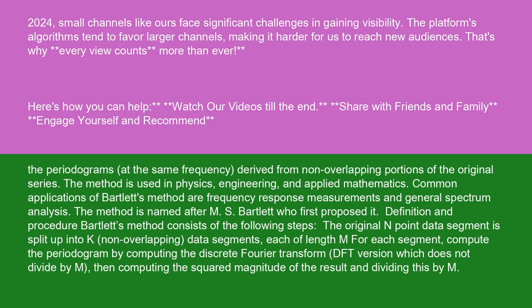Definition and procedure: Bartlett's method consists of the following steps. The original endpoint data segment is split up into K non-overlapping data segments, each of length M. For each segment, compute the periodogram by computing the discrete Fourier transform (DFT) version which does not divide by M, then computing the squared magnitude of the result and dividing this by M.